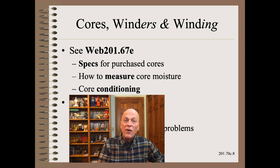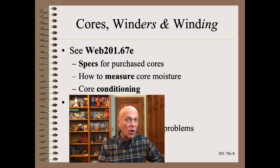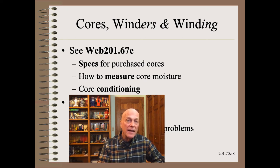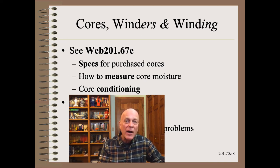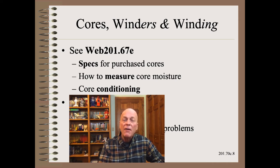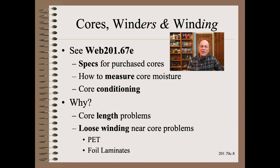The effects of environmental conditions may be equally profound on fiber cores, winders, and winding. In my advanced Web 101 winding class and in Web 201.67E, we covered why you must specify fiber core moisture in the purchasing agreement for cores. In Web 201.69E, we covered how to measure core moisture. Finally, in Web 201.67E, we covered when and why and how you might need to do core conditioning for moisture management. The short answer is that moisture changes can cause additional variability in fiber core length beyond what is introduced by the core cutter itself.